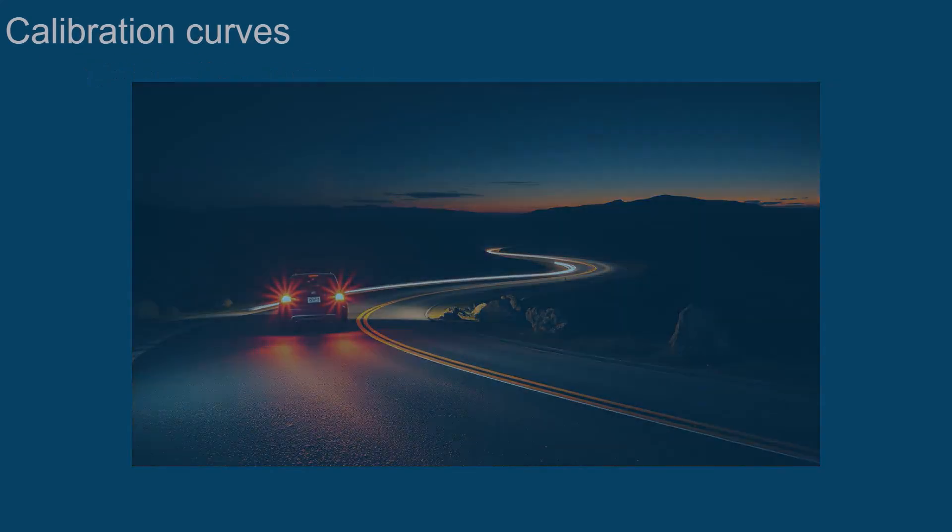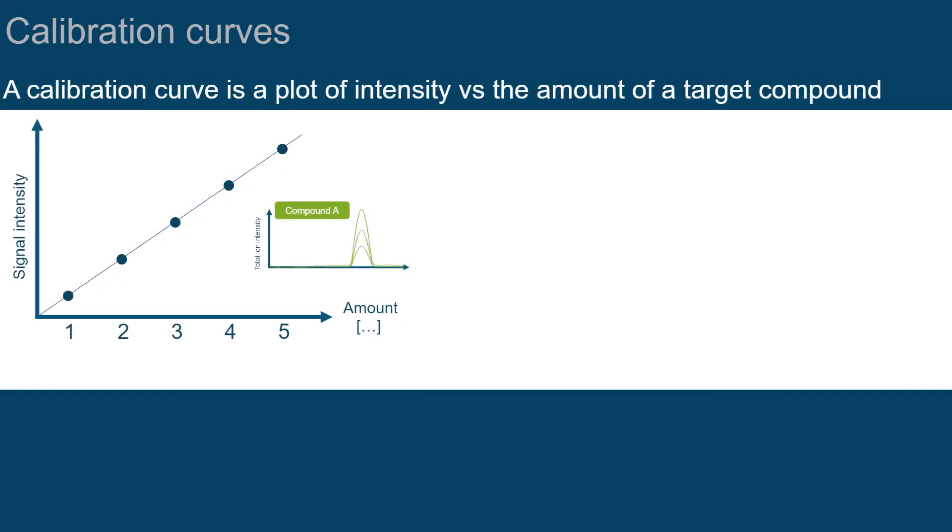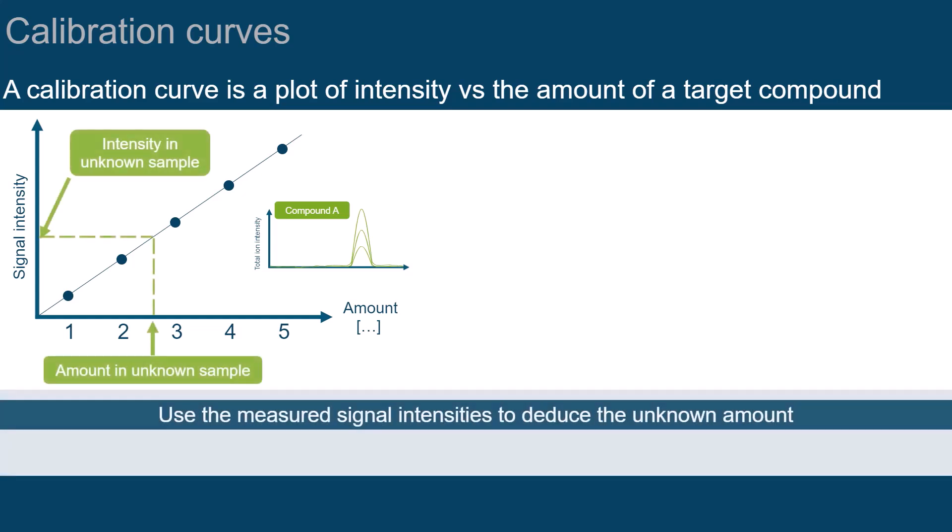What is a calibration curve? A calibration curve is a plot of the observed signal intensity versus the actual amount of a target compound. You can use the measured signal intensities in the calibration curve to deduce the unknown amount in your samples.